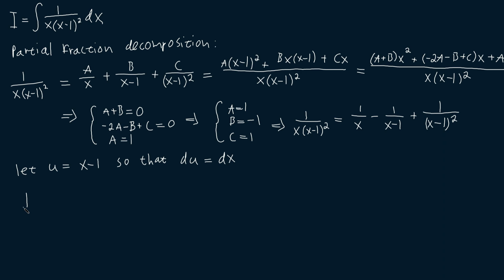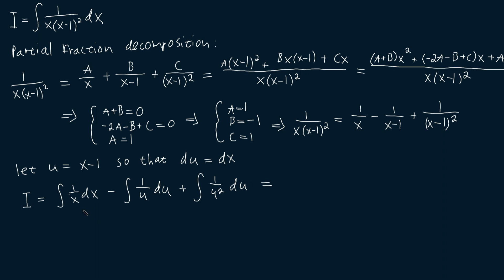Now we can say that our integral I is equal to the indefinite integral of 1 over x dx, minus the indefinite integral of 1 over u du — since x minus 1 was equal to u — plus the indefinite integral of 1 over u squared du. Then, the integral of 1 over x dx is just the natural logarithm of the absolute value of x. Then we're going to have minus the natural logarithm of the absolute value of u, minus 1 over u, since the derivative of 1 over u will be minus 1 over u squared, plus our integration constant C.